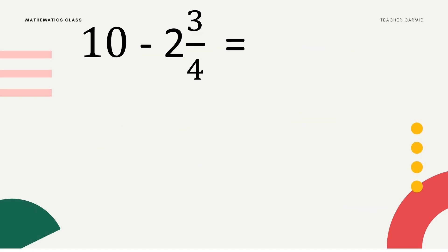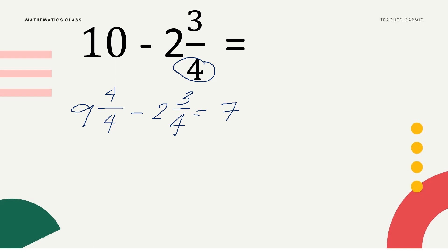Last number: 10 minus 2 and 3/4. When subtracting a whole number from a mixed number, we convert 10 into a mixed number. Subtract 1: 10 minus 1 becomes 9. The borrowed 1 becomes a fraction using the same denominator — 4/4. So we have 9 and 4/4 minus 2 and 3/4. Since it is now a similar fraction, subtract the whole numbers: 9 minus 2 equals 7. Subtract the numerators: 4 minus 3 equals 1. The answer is 7 and 1/4.